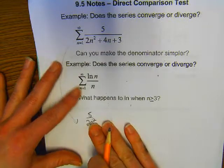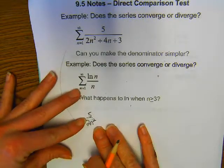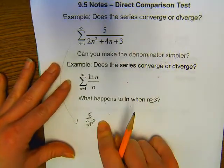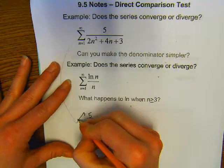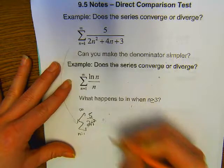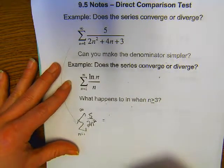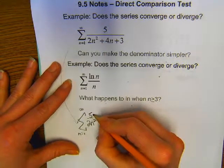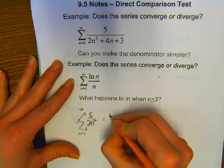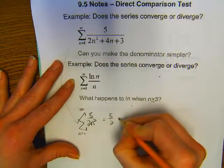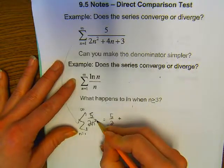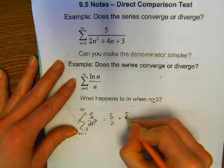My guess is that this series converges, and I'm going to show some terms. For n=1: 1 squared is 1, so we get 5 over 2 — that's 5/2. For n=2: 2 squared is 4, 2 times 4 is 8, so we get 5 over 8. For n=3: 3 squared is 9, 2 times 9 is 18, so we have 5 over 18.